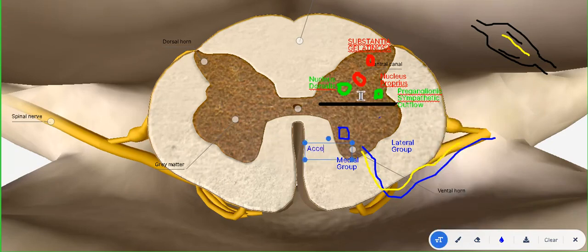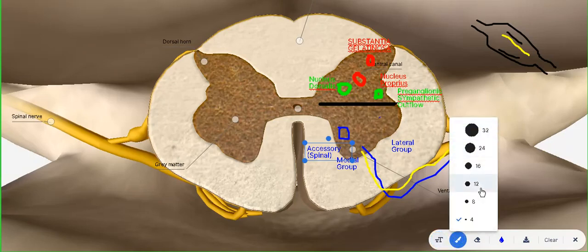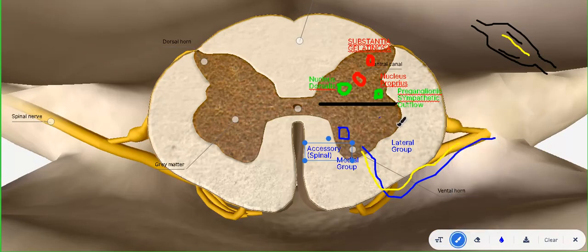Now the accessory nerve is your 11th cranial nerve which comes from the medulla region. That's the cranial part. The spinal part comes right here from the cervical, although we're looking at the lumbar part of the spinal cord. But just imagine this is the cervical part. From this region you'll have the spinal part of the accessory nerve, and this supplies your sternocleidomastoid and your trapezius.